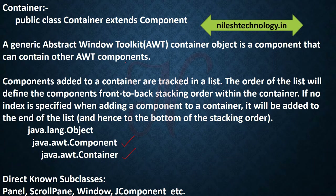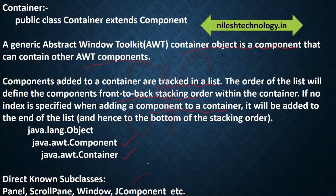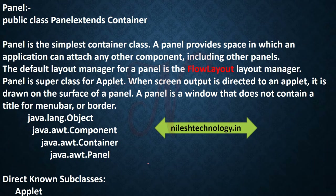In generic AWT, a Container object is a Component that can contain other AWT components. Components added to a Container are tracked in a list. The order of the list defines the component front-to-back stacking order within the Container. If no index is specified when adding a component to a Container, it will be added to the end of the list. Some subclasses of Container are: Panel, ScrollPane, Window, and JComponent.